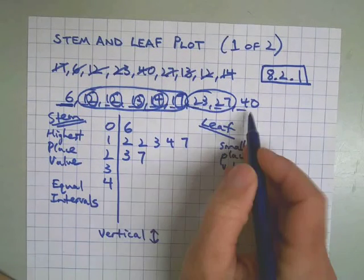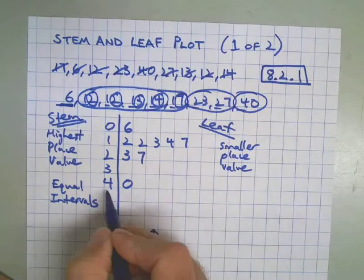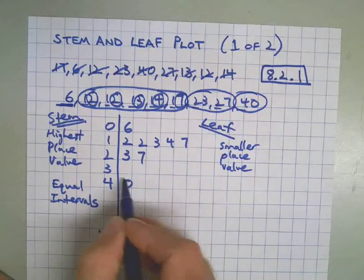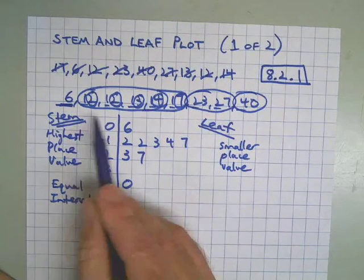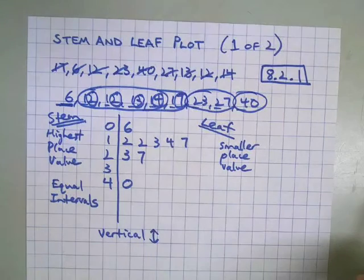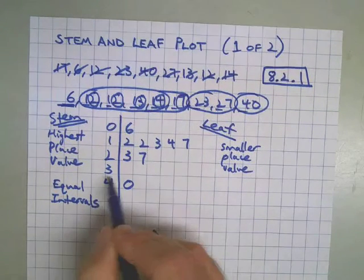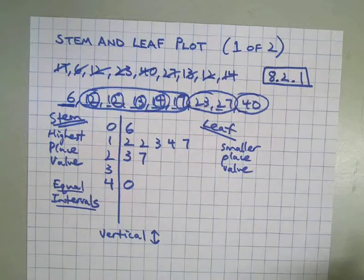And then finally, just like I was talking about, we're going to put a 0 there next to the 4, because this is 40. There's a 4 in the tens place, and no ones. So this is a number. Every number you put in the leaf means that you've got a corresponding number up here in the list. So you don't put a 0 there to say I don't have something. But you do need the 3 there, so we have equal intervals for our graph.